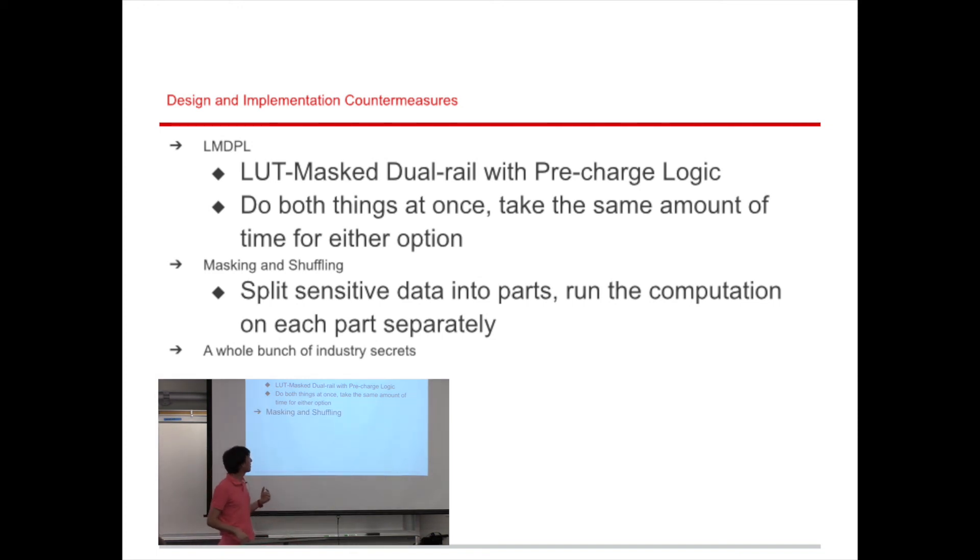On the software side, there are two techniques called masking and shuffling, which are both essentially splitting your sensitive data into parts, hopefully linearly combinable parts, and then running the computation on each part separately. And by ensuring that people don't have access to every single part of the computation, or at least can't consume all that information and process it back into a single lump, then at least you've mitigated the possibility of doing some power analysis and figuring out what the data originally was. And a whole bunch of other industry secrets, which I'm not allowed to even mention who they might even be, because I was told I'm not allowed to mention them.